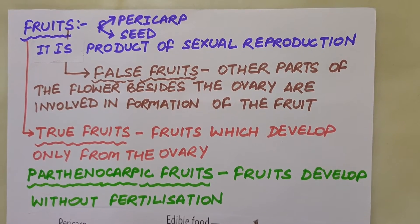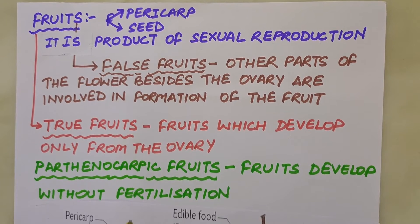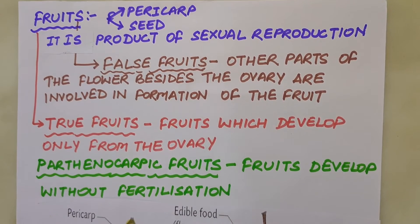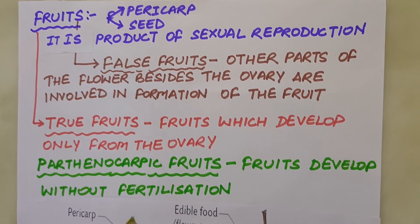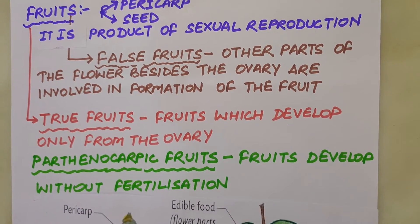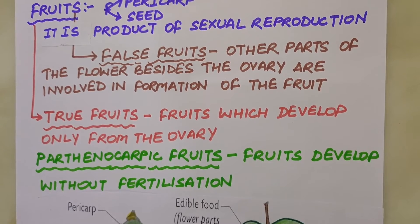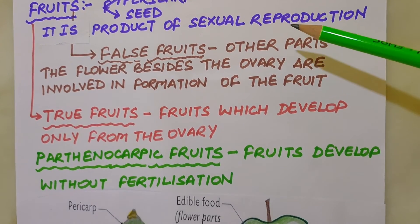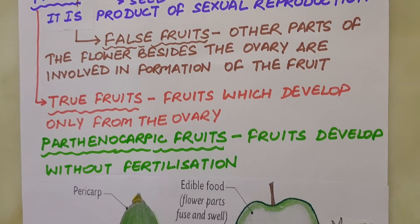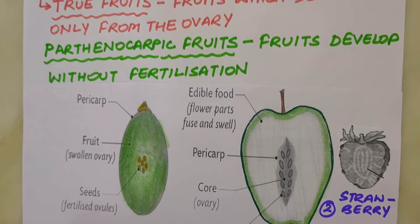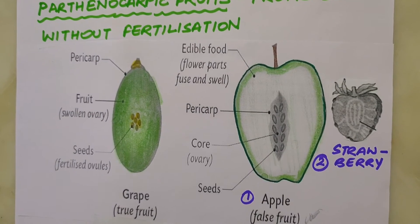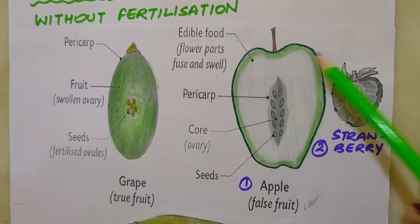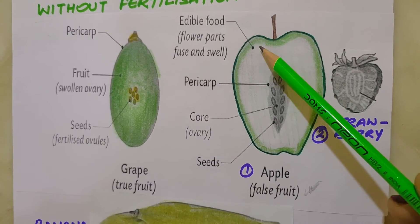As ovules mature into seeds, the ovary develops into a fruit — the transformation of ovules into seed and ovary into fruit proceeds simultaneously. For most people, fruits are like papaya, mango and apple. However, for a botanist, fleshy and juicy mango or papaya are as much a fruit as groundnut or cashew nut, which are dry in nature. Fruits are the final product of sexual reproduction, forming from the ovary after fertilization. In most cases, fertilization and fruit formation trigger the withering of other parts of the flower including sepals, petals and stamens. However, in some cases like apple, the floral part — thalamus — becomes a part of the fruit.